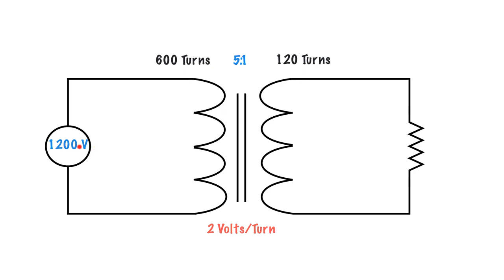Now you see here that I've got 1200 volts and I have 600 turns. That means that I have, if I go 1200 divided by 600, I have 2 volts per turn.